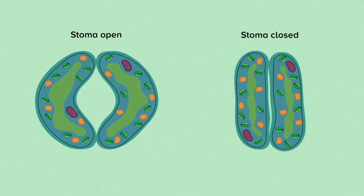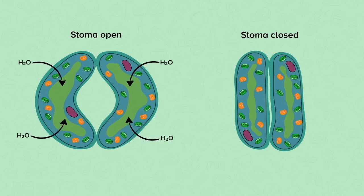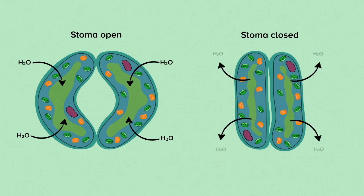During the day, the guard cells take in a lot of water. This makes them swell up and push away from each other to open the stoma. At night, the guard cells lose a lot of water. They go floppy and come together to close the stoma. It is important that the stomata are open when it is light so that the plant can take in enough carbon dioxide for photosynthesis. In the dark, the plant does not photosynthesize and the small gap left between the guard cells is big enough to allow oxygen in for respiration.